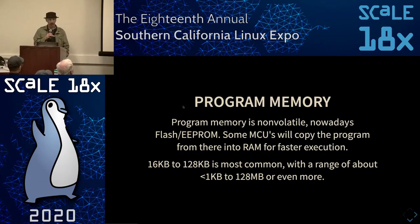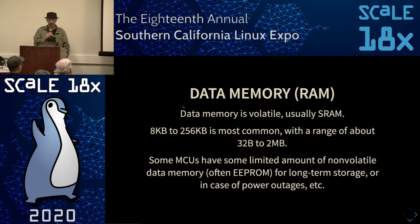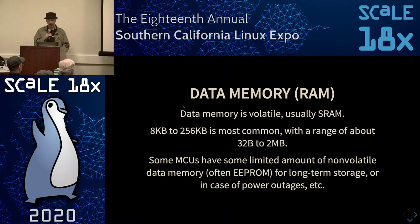On a microcontroller, instead of the 32 gigs of RAM a laptop might have, they usually have 16K to 128K, which means you have a whole different idea of how you're going to code. Data memory is commonly anywhere from 8 kilobytes to 256 kilobytes — which isn't a lot. Some have non-volatile RAM where you can store data if you lose power or you're logging data, but usually it's very small. Often you'll want to put that off-chip anyway.